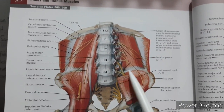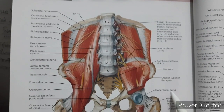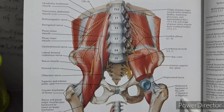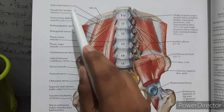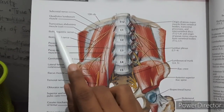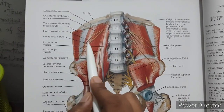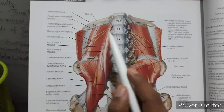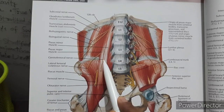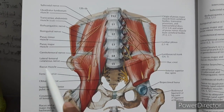In this diagram you can see the iliac crest, the anterior superior iliac spine (ASIS), and the iliopectineal bursa. The transverse abdominis muscle is cut. The iliohypogastric nerve arises from L1, the ilioinguinal nerve from L1, the psoas minor and psoas major muscles are labeled, and the genitofemoral nerve comes from L1 and L2. The lateral femoral cutaneous nerve has root value L2 and L3, and the iliacus muscle is shown.